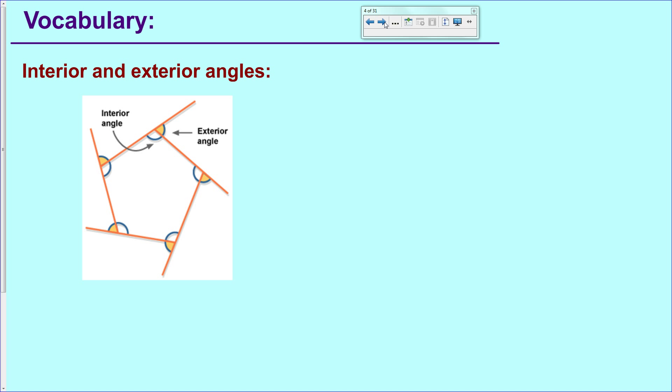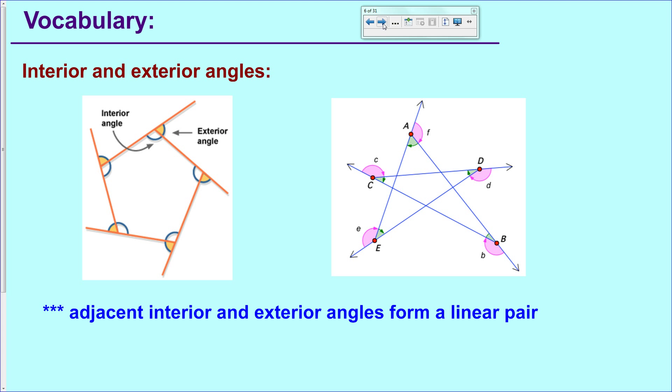Now, that may seem fairly obvious on a nice, regular, convex pentagon sitting right there, but I want to show you that the same holds true for something a little bit more irregular like this star shape here. We still have exterior angles and interior angles, and what's even cooler, the exterior angles are labeled in pink, the interior angles are labeled in green, and you can still see that these two angles, the interior and the exterior, are still supplementary. That fact that interior angles and exterior angles form a linear pair will be useful to you.